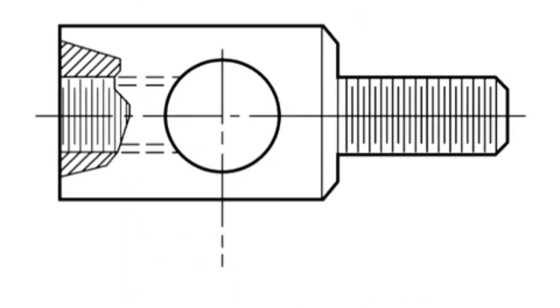Visible lines, sometimes called object lines, represent the edges or lines on an object. They are solid lines with a thick weight.